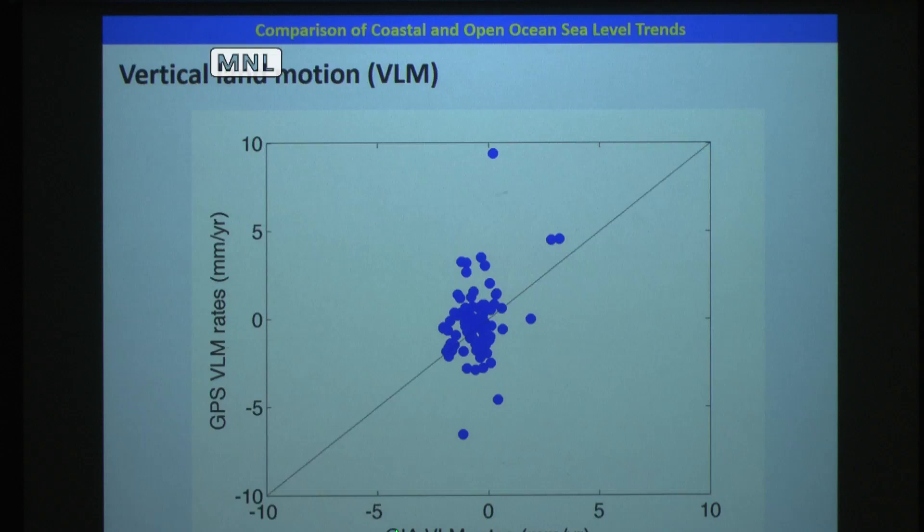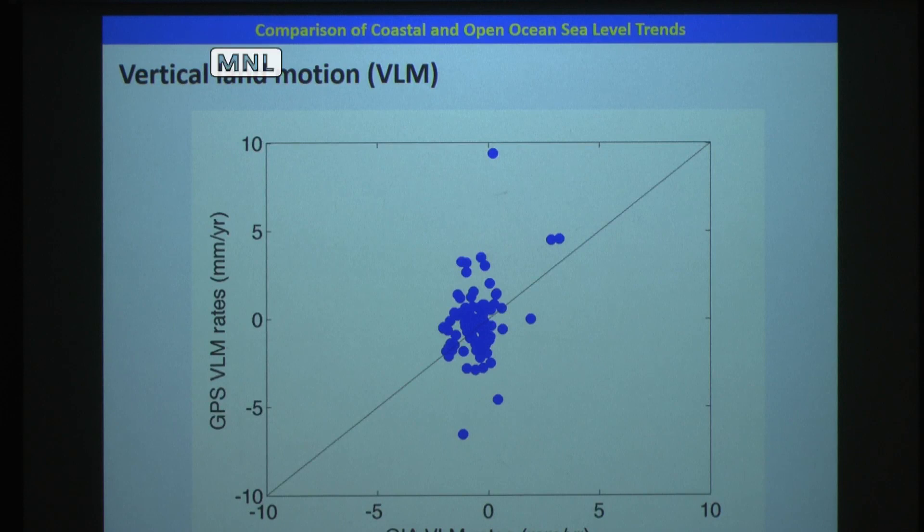Vertical land motion rates are often from GIA models and now from GPS observations. This scatter plot shows GIA-modeled versus GPS-observed vertical land motion rates. The GIA vertical land motion rates do not agree well with observations, so we use GPS vertical land motion to correct tide gauge sea level trends. The sea level trend difference — defined as open ocean sea level trend minus coastal sea level trend — is shown in two histograms.